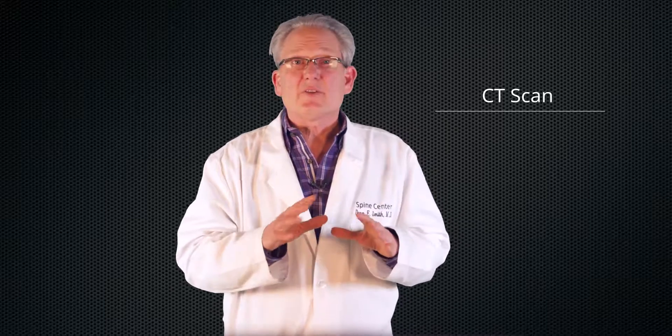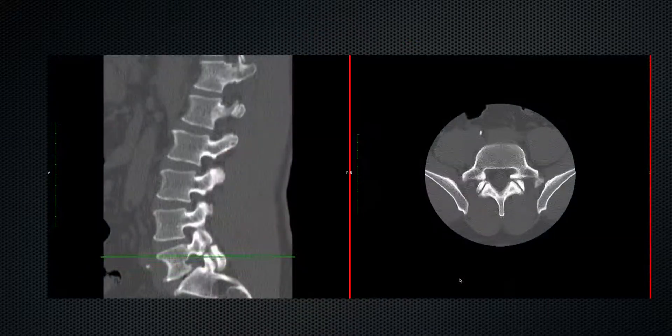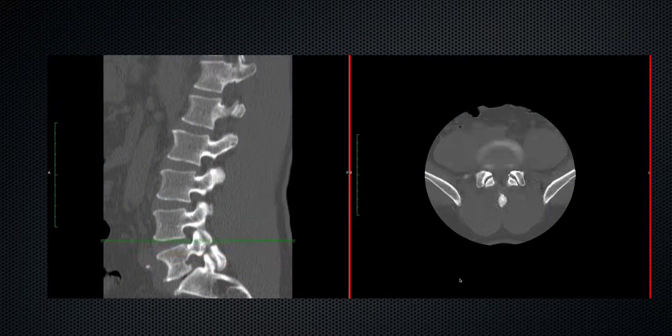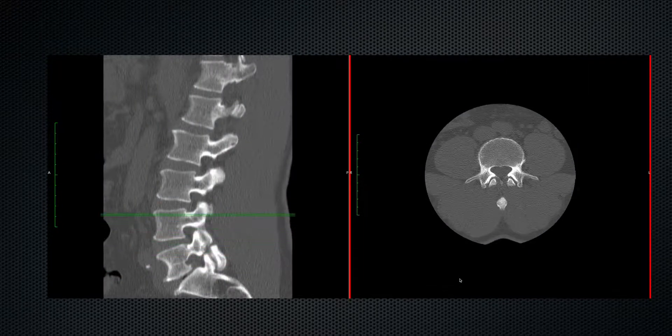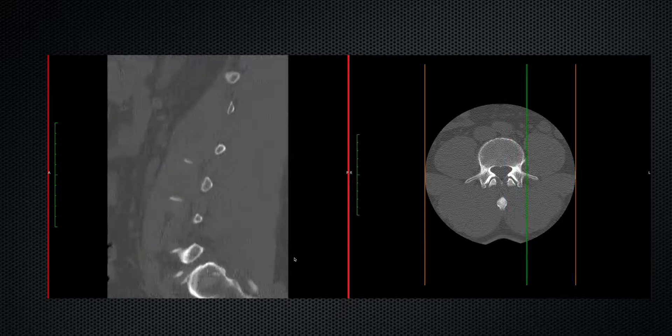Another study we will use is a CT scan. A CT scan is just a very special x-ray. It gives us a better ability to see the anatomy of the fracture itself. We can tell if it's an old fracture, a new fracture. We can see if it's healing, or if we try to fuse it, we can see if it's fused.